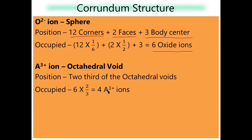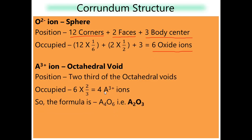We have six oxides and four A³⁺, giving the formula A4O6. The simplest formula is A2O3 — divide by two. Out of six octahedral voids, we use 2/3, giving four octahedral voids with four A³⁺. This is the structure of corundum. Corundum follows HCP structure; all remaining structures follow FCC structure; cesium chloride follows BCC structure. Remember all these points. To be continued.